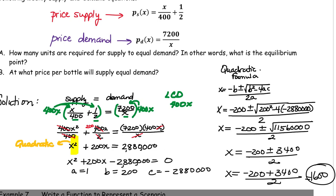So that's the number of units at which the price that consumers are willing to pay is the same as the price that suppliers are willing to charge. So that's the answer to part A up here, the number of units, 1,600 units.